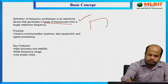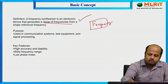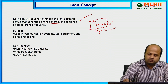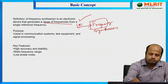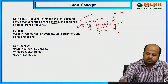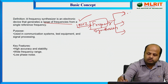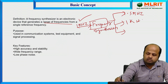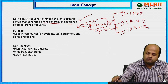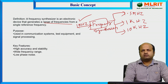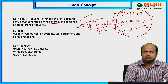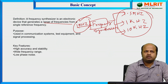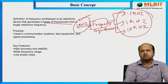Let us understand with the help of a block diagram. Suppose we provide a 1 megahertz input to the frequency synthesizer — we can get multiple output frequencies such as 0.5 megahertz, 1 kilohertz, and 10 kilohertz. So, a frequency synthesizer is an electronic device that generates multiple frequencies from a single given reference frequency.